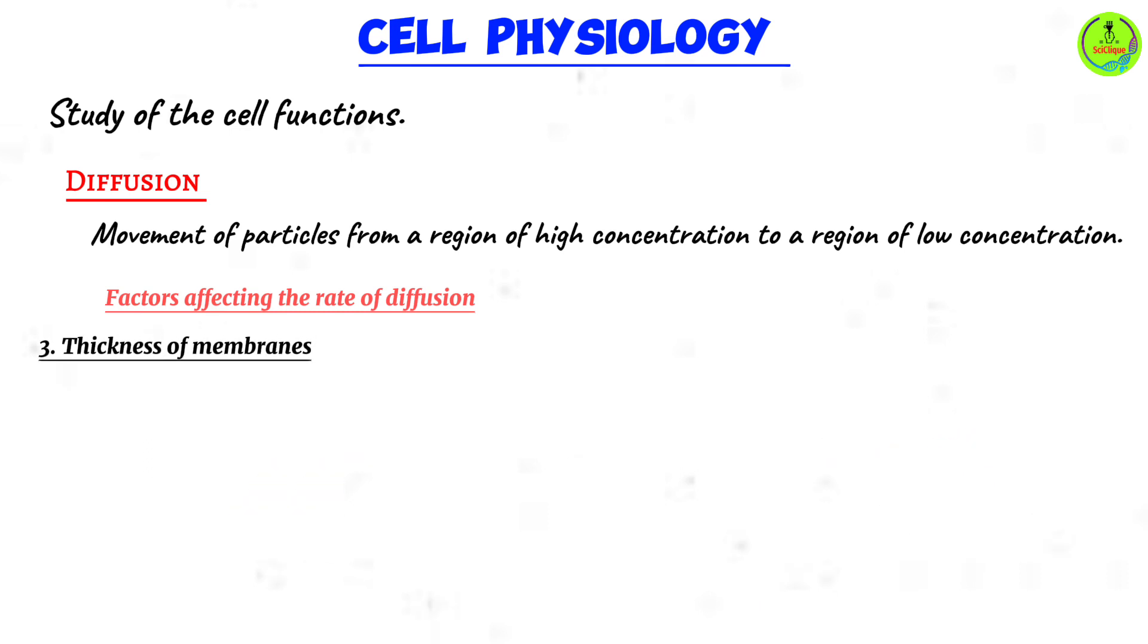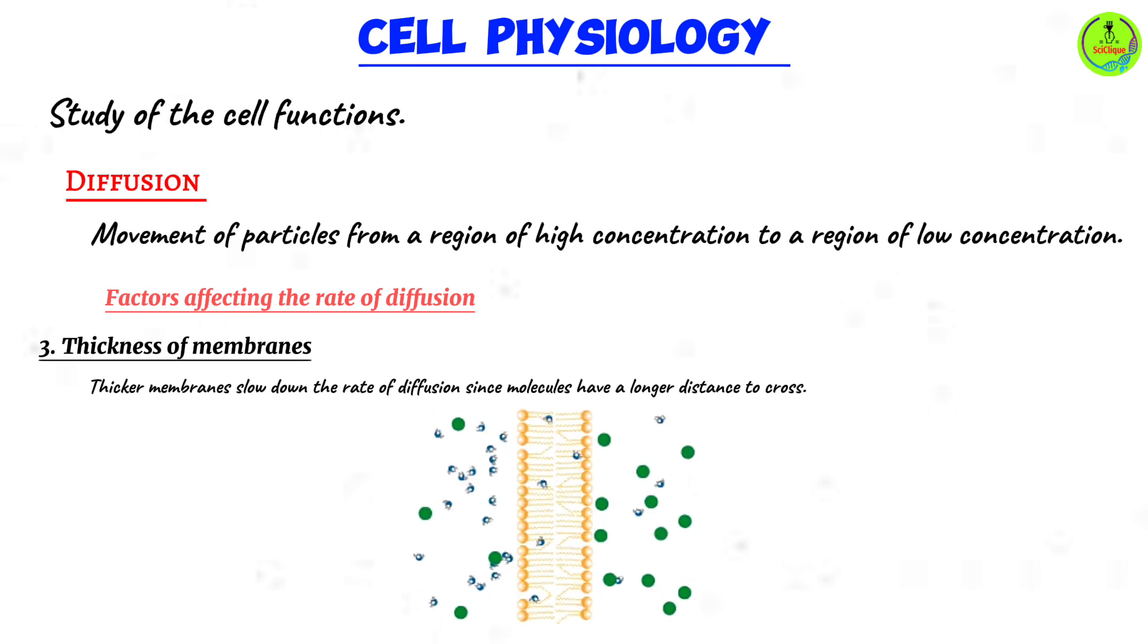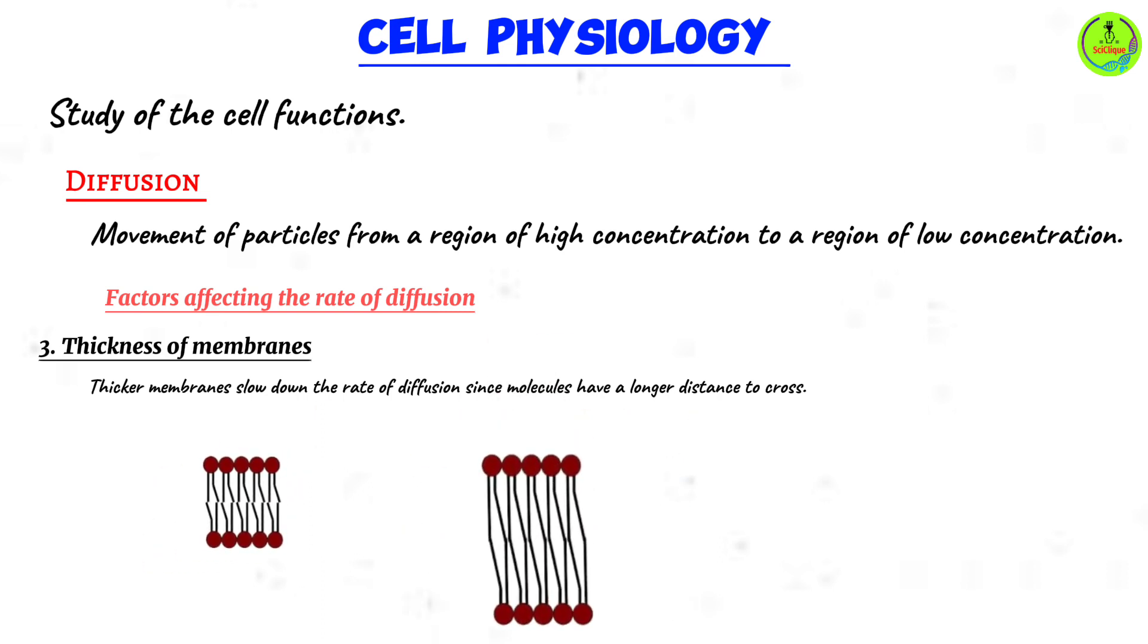Moving on to the next one: the thickness of membranes. I want to say this - diffusion can take place with or without a membrane. In the case of living organisms, we have cells which are surrounded by cell walls and cell membranes. As such, in our bodies you're going to have diffusion occurring across membranes.